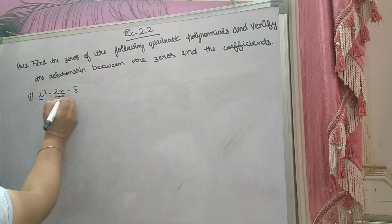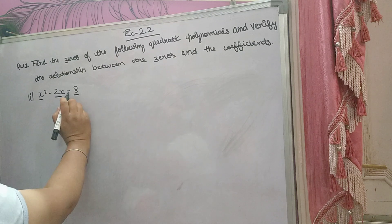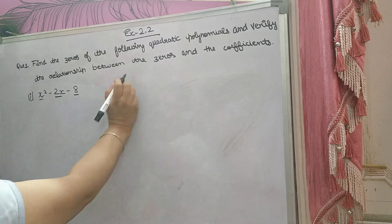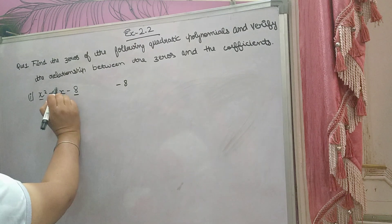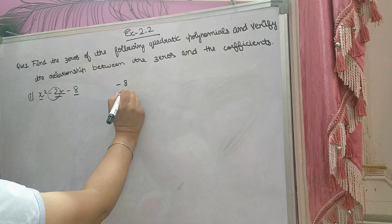Now firstly you have to find the zeros. For finding zeros, firstly you have to factorize it. Minus 8 is there. Now minus 8 factors you want to make so that you will get minus 2 after adding or subtracting. So 8 is 4 into 2.